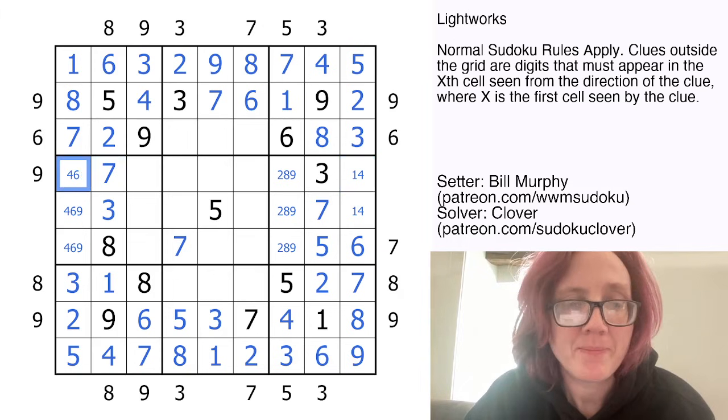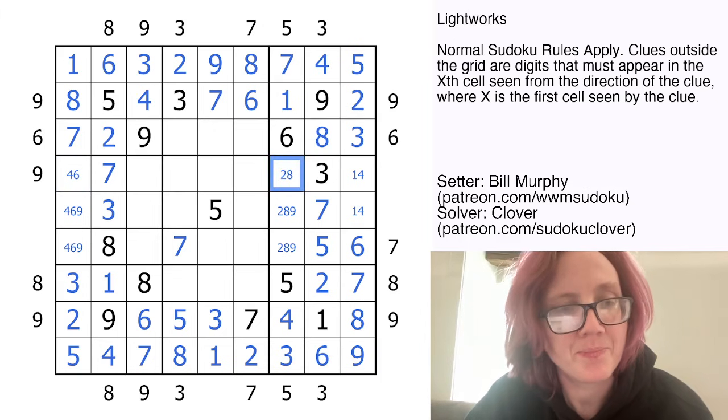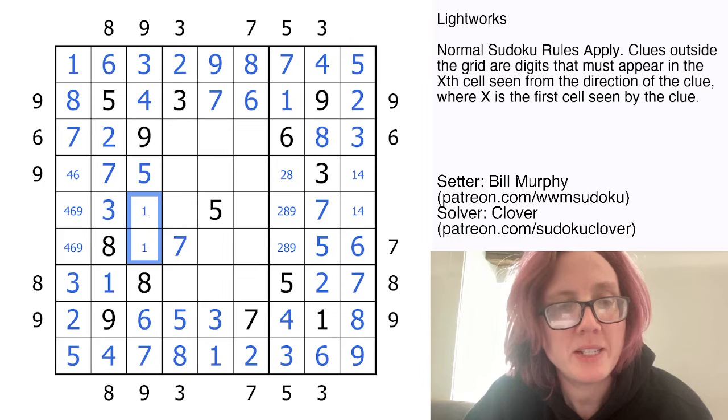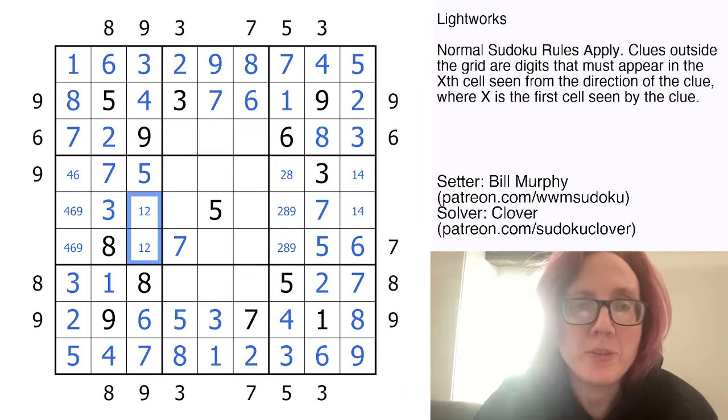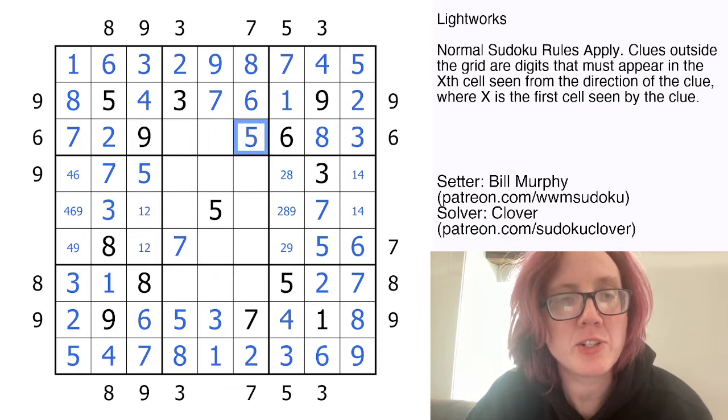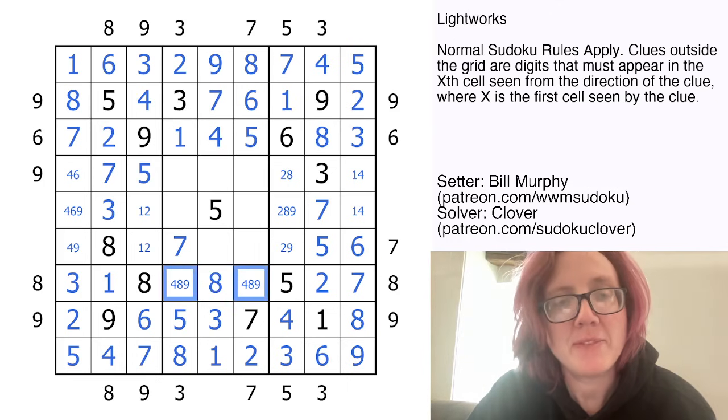It also tells us this can't be a 9 because 9 can't appear in the seventh position from the clue. I need a 5 in the region. This is the only remaining place I can put it. And then these are going to be 1 and 2. This can't be an 8 because there's an 8 in the row. That can't be a 6 because there is a 6 in the row. I need a 5 in this region. It has to go right here. And then I'll finish off with a 1 and a 4. These are going to be 4, 8, and 9. And because I have 4 and 9 already in column 5, that will be my 8.